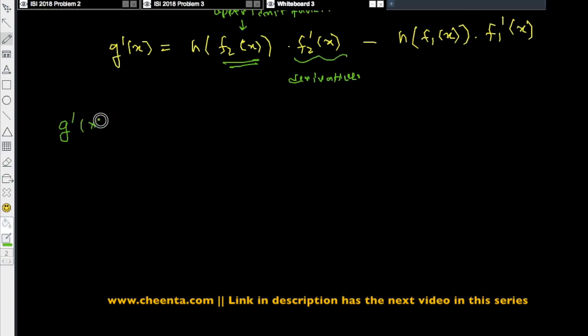So we have g prime x, let me copy it here. We have g prime x equal to f of 2x by x minus f of x by x.